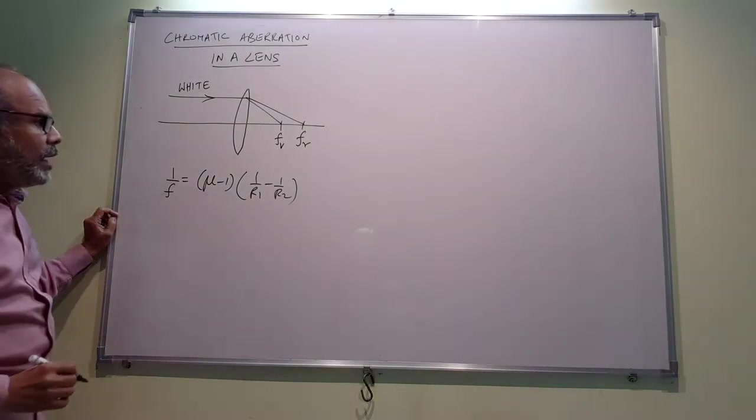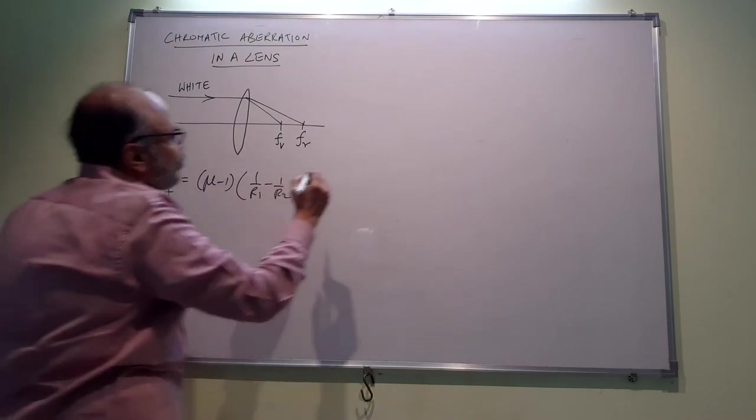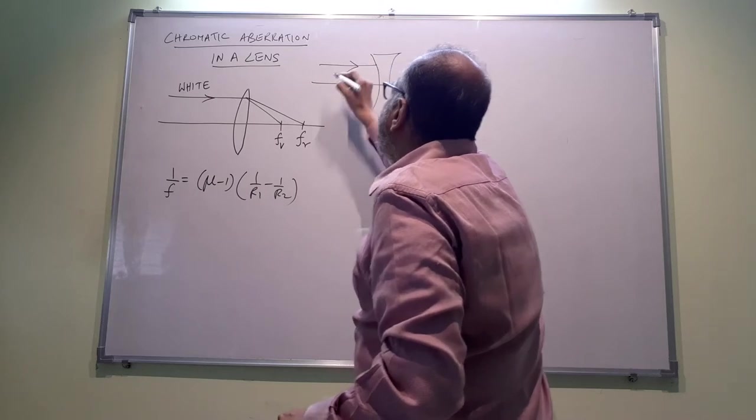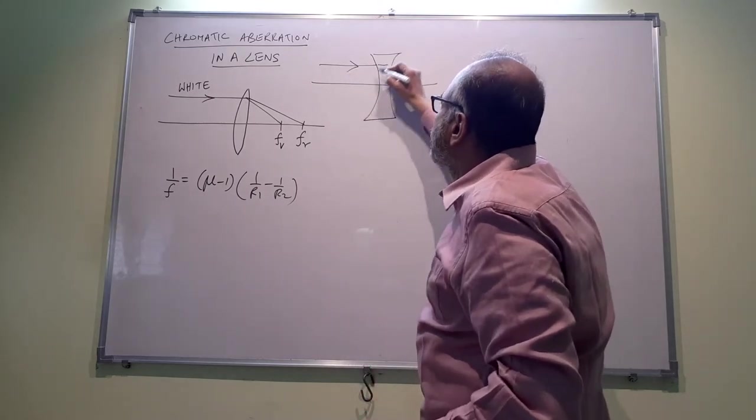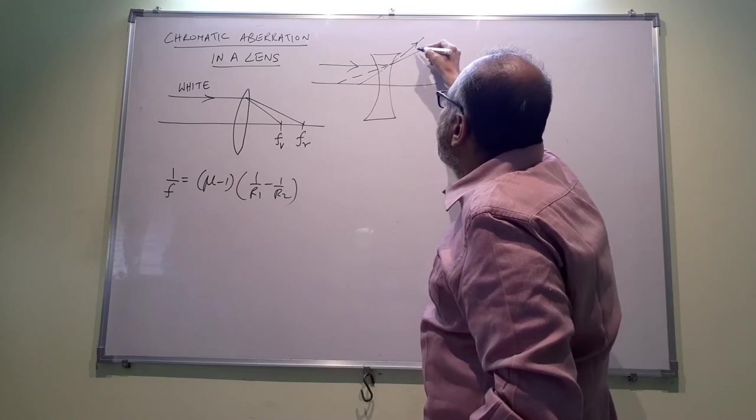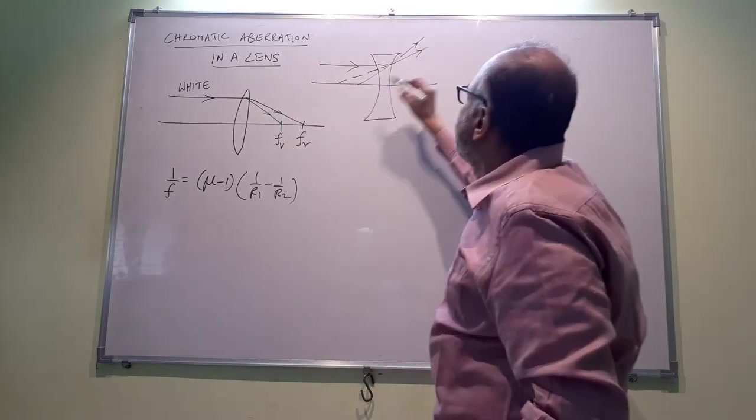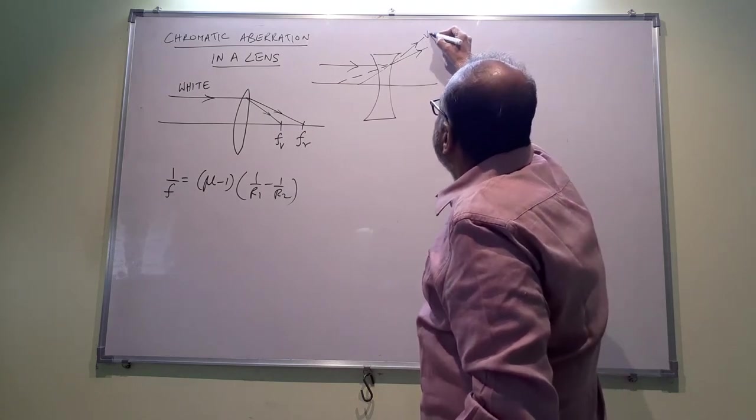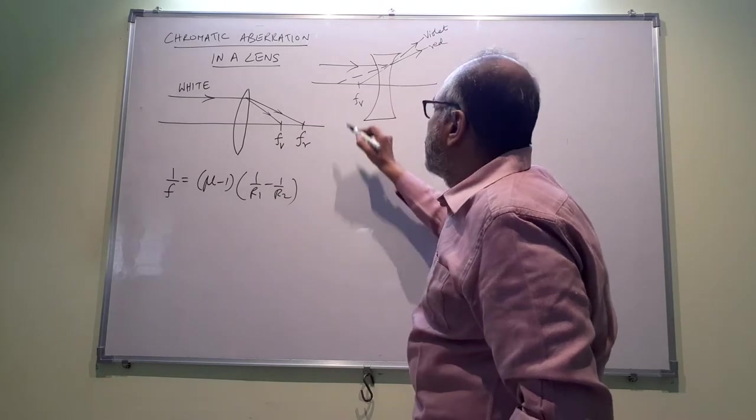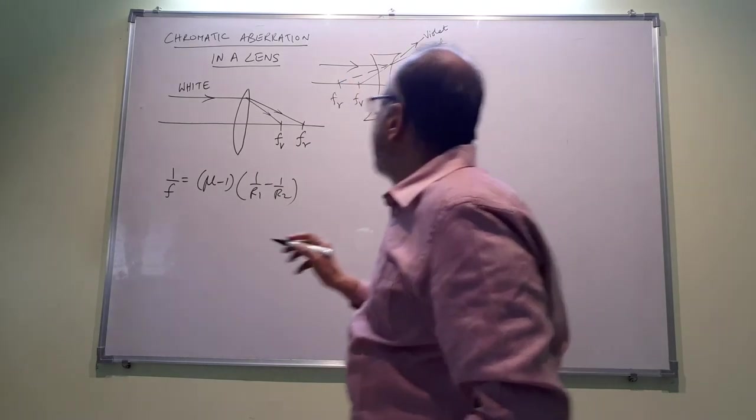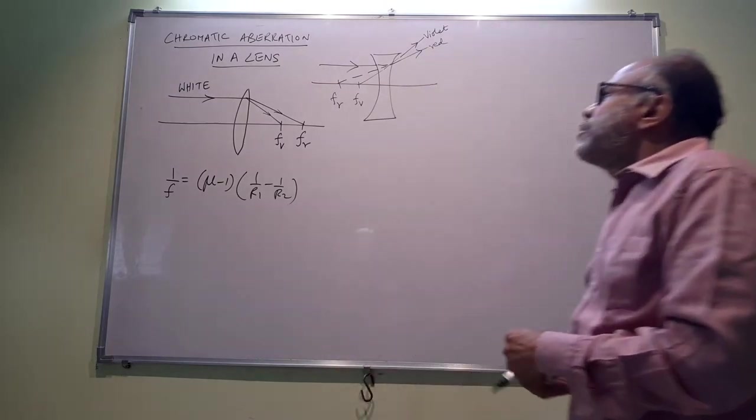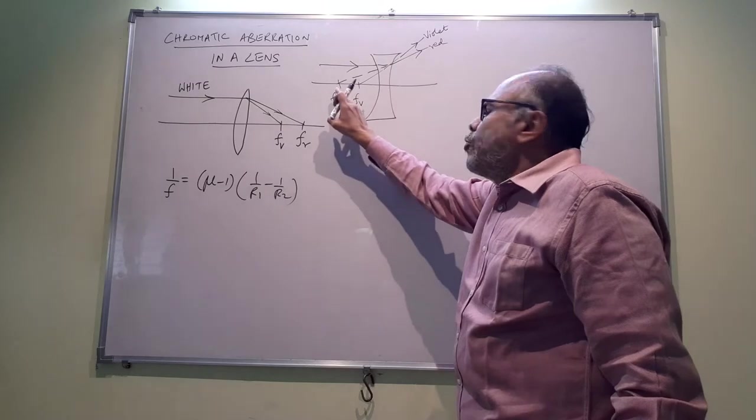The same thing would happen for a concave lens as well. If you took a concave lens, let's say we have a concave lens and there is white light again falling here, and you now have again two rays like that. This should be violet, this will be red. So the focus of violet would be here, focus of red would be here. Again, focal length of violet is less than the focal length of red.